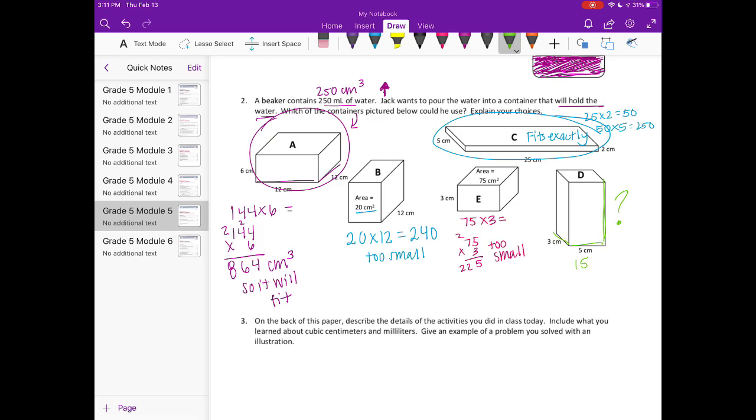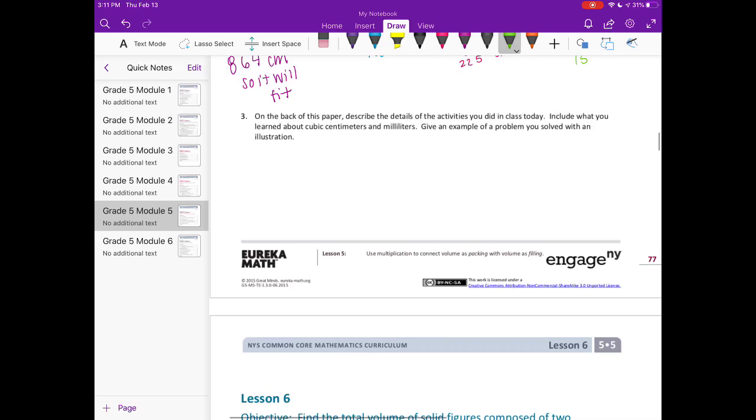Number three. On the back of this paper, describe the details of the activities you did in class today. Include what you learned about cubic centimeters and milliliters. Give an example of a problem you solved with an illustration. So this one you're on your own because I obviously have no idea what you guys did in class today. So do your best, try and think of something that you learned today and write it on the back.